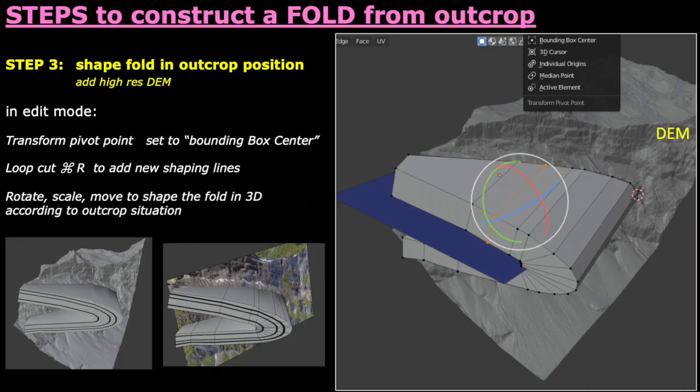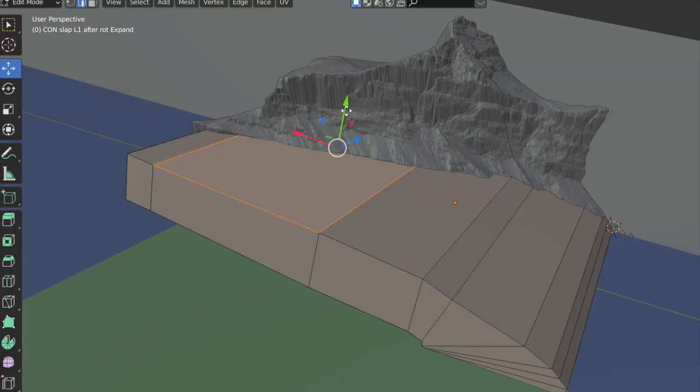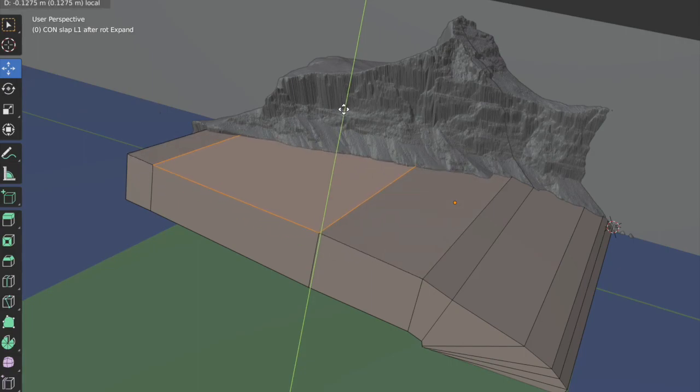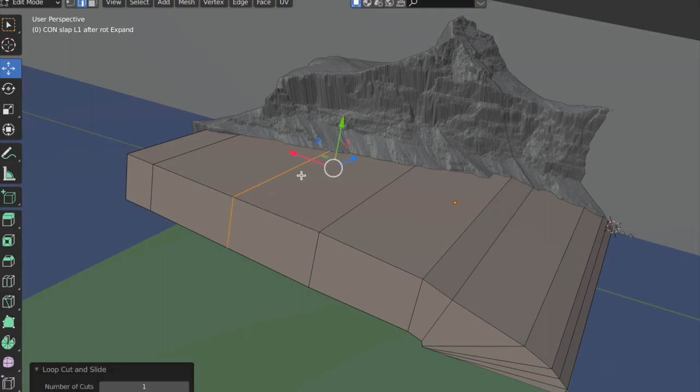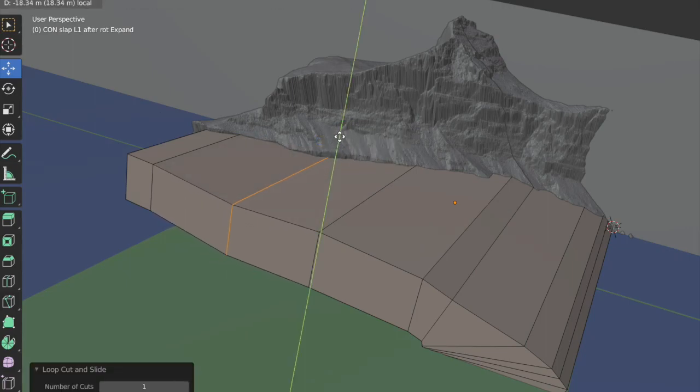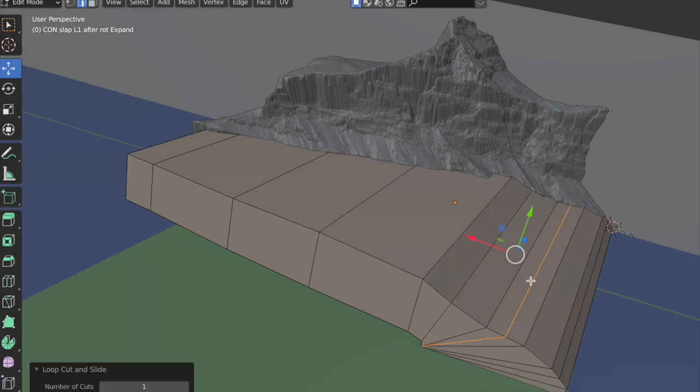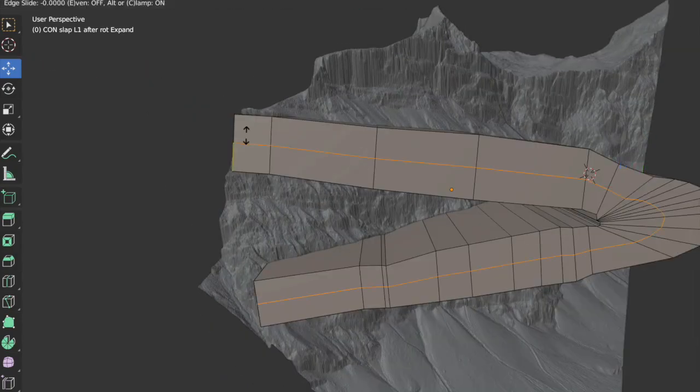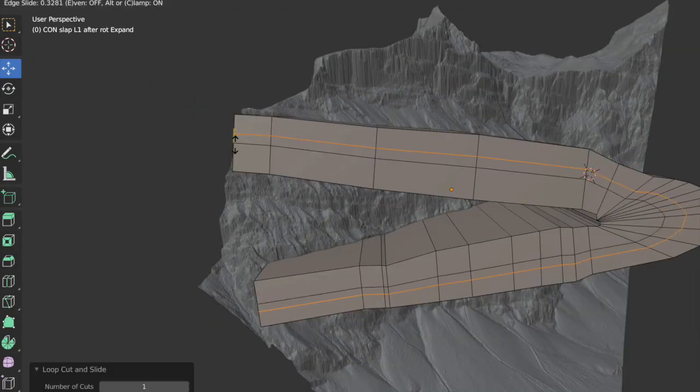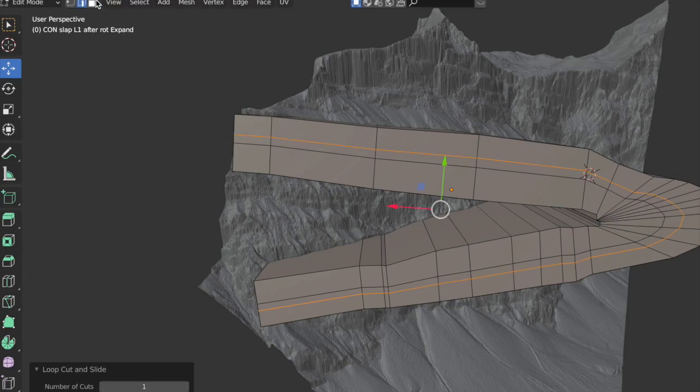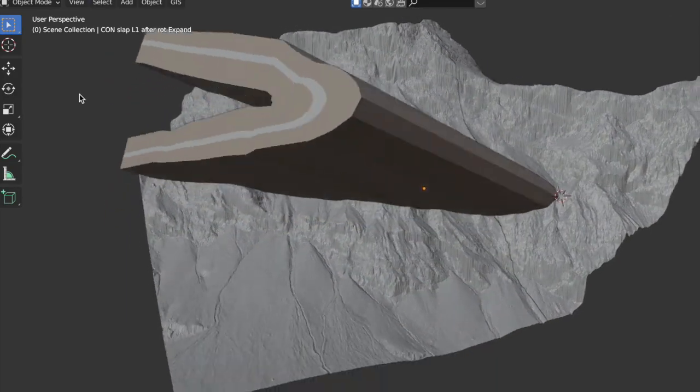We will now continue to shape the fold geometry in its spatial orientation with the help of a georeferenced DEM, the digital elevation model. Once we have analyzed in as much detail as necessary the fold geometry, we can add internal layers directly through a loop tool.